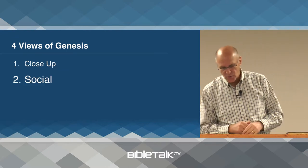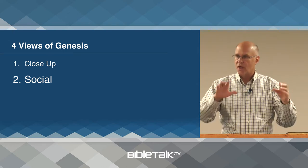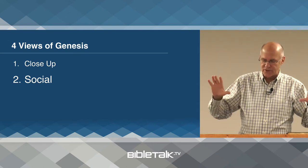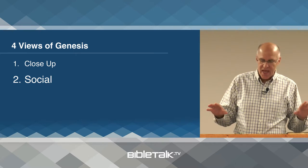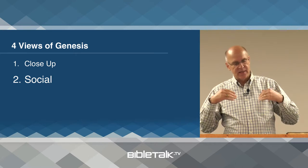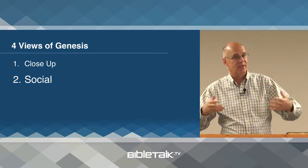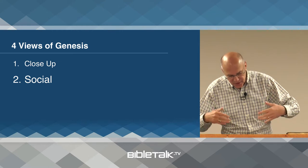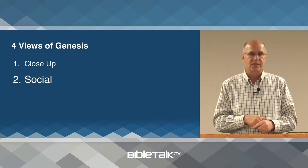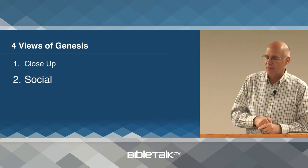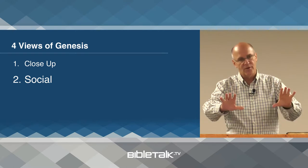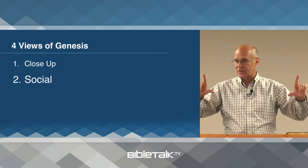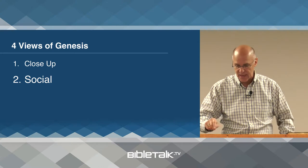The next view is the social view, kind of a wide angle — a wide view of society at large as it begins after the sin of Adam and after the sin of Cain, as society begins to disintegrate due to the sins that have been committed. The writer pulls back and gives you a wider view of what's taking place in society.